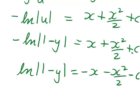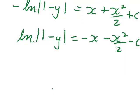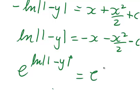To get rid of that natural log on the left-hand side, we can raise both sides as powers of e, giving e to the ln of |1 minus y| equals e to the power of (negative x minus x²/2 minus c).